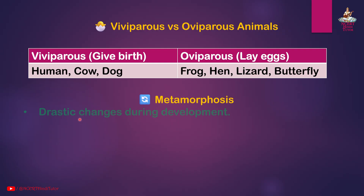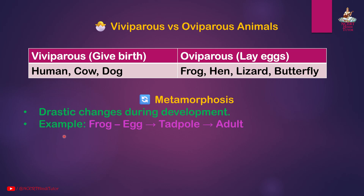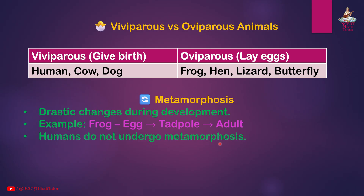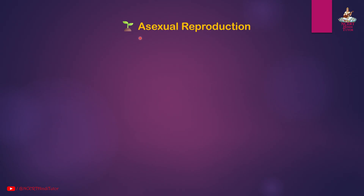Metamorphosis involves drastic changes during development. Example: a frog undergoes metamorphosis — egg, then tadpole, then adult. Humans do not undergo metamorphosis.